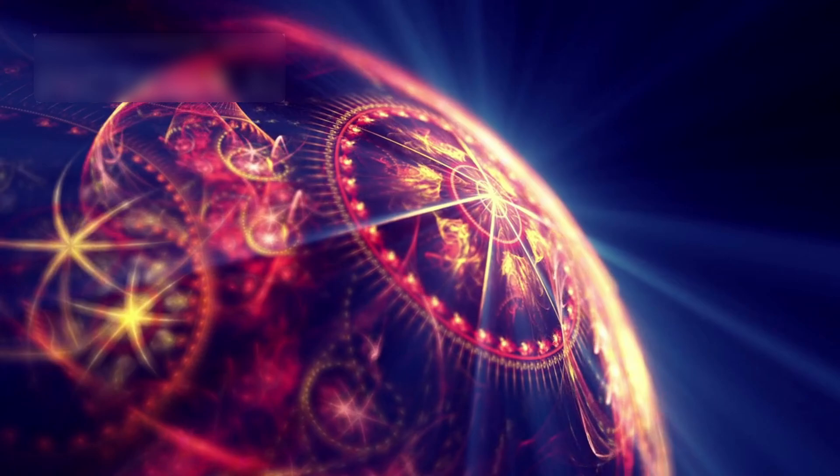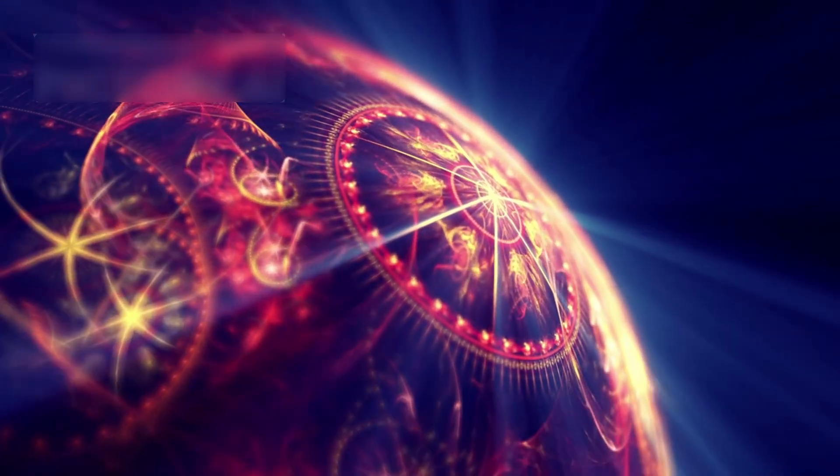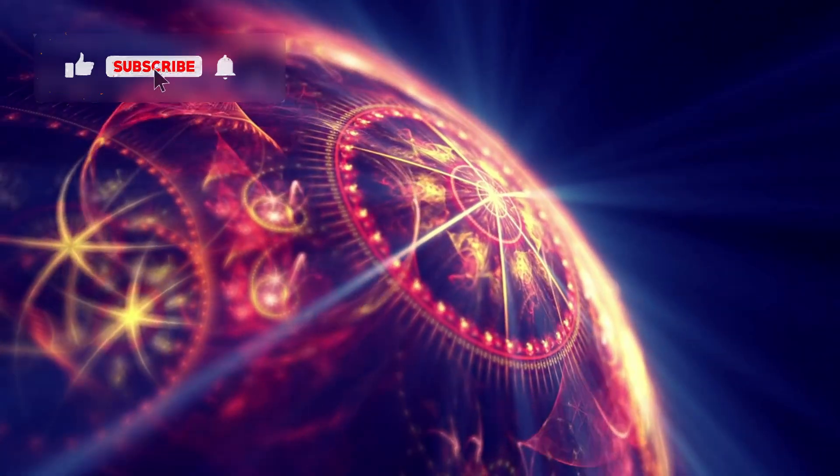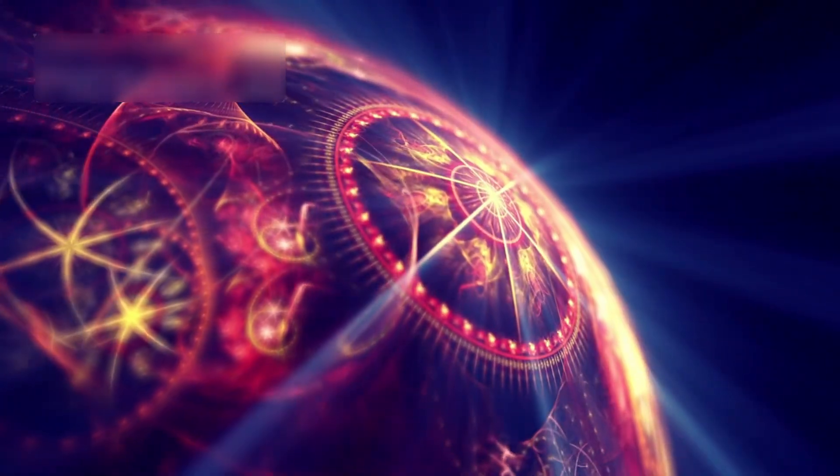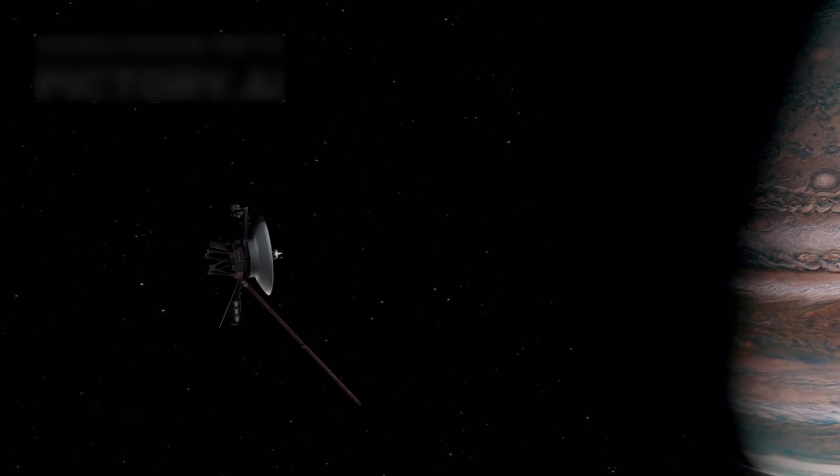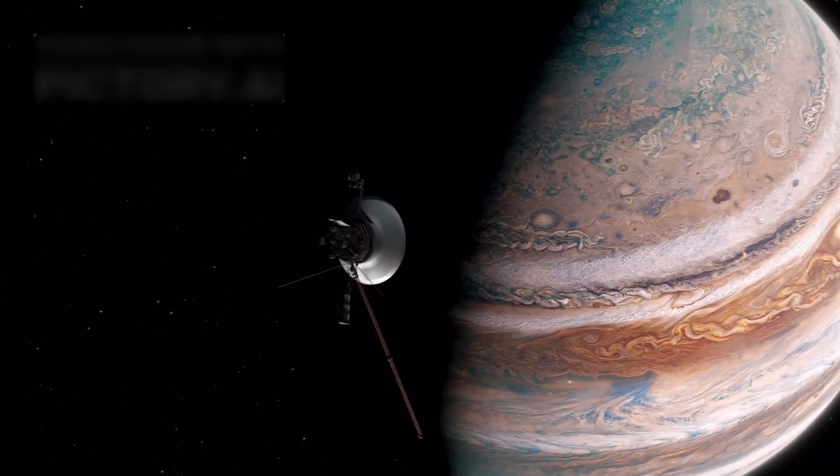This alignment, like a string of pearls in space, happens only every 176 years, pulling Voyager forward like an invisible sling. NASA didn't hesitate and sent Voyager 1 and 2, just 15 days apart in the summer of 1977.